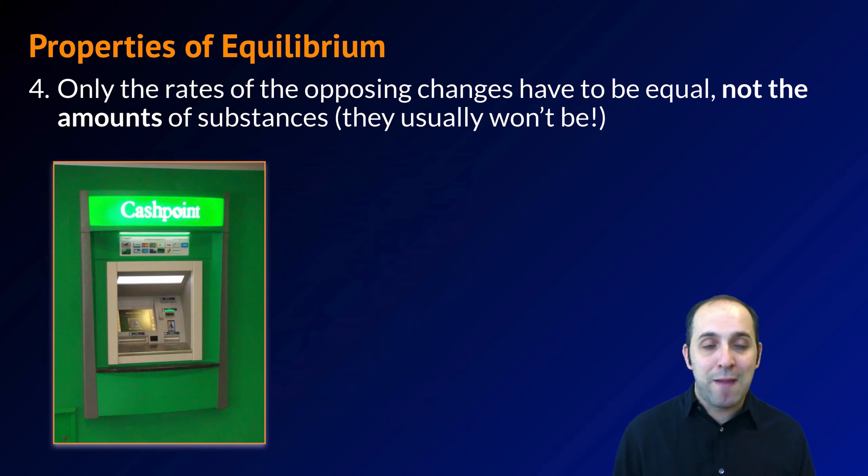Our final property of equilibrium is that only the rates of the opposing changes have to be equal, not the amounts of substances. In fact, very rarely at an equilibrium will the substances be present in equal amounts. It's only the rates of change.